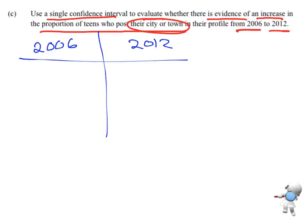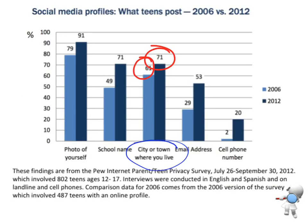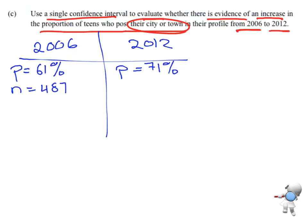So in 2006 the proportion is 61%. In 2012 the proportion is 71%. Now in 2006 there was a sample size of 487 and in 2012 there was a sample size of 802. And from part A already we found that the margin of error in 2012, 1 over the square root of 802, that is 3.53%.